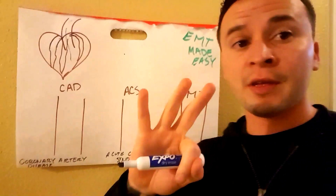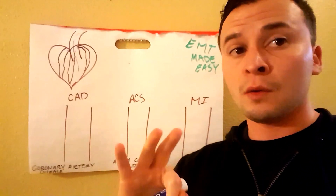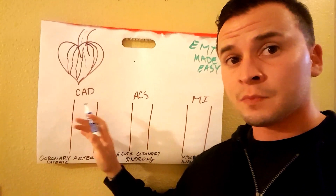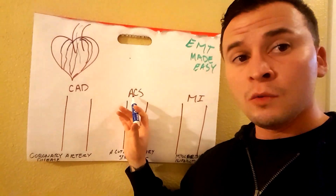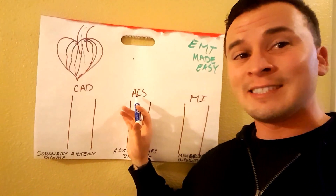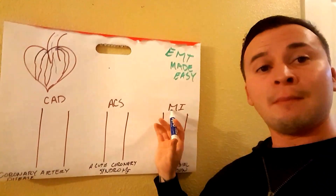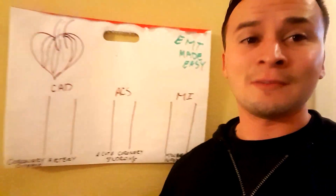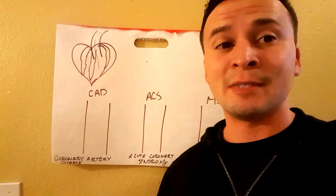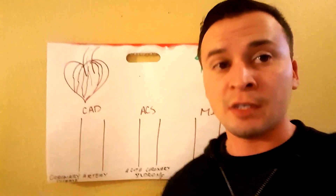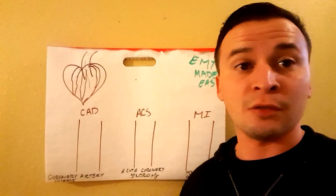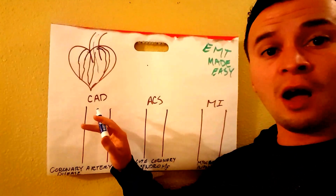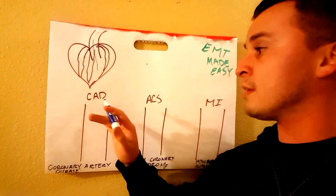I'm going to go over three things you need to know: first, coronary artery disease; second, acute coronary syndrome; and third, MI, which stands for myocardial infarction. Myocardial means tissue of the heart, and infarction means death — so MI means heart tissue death.